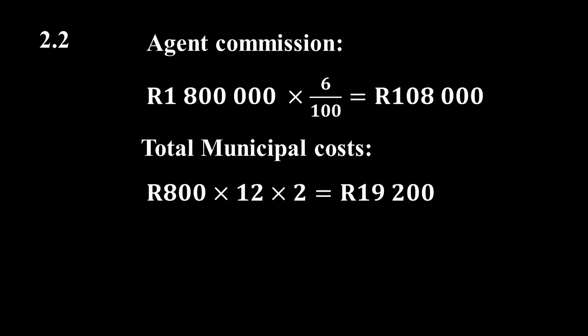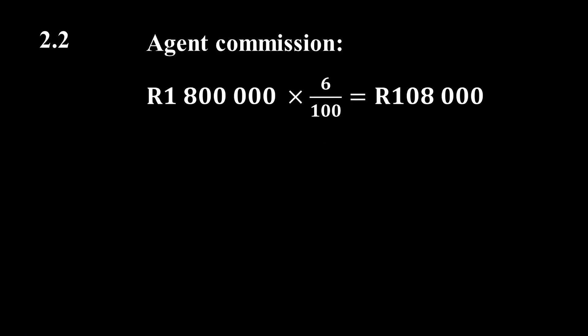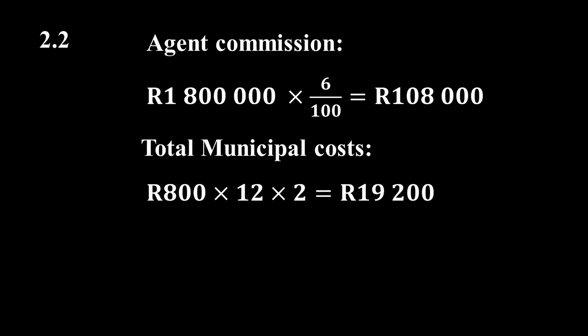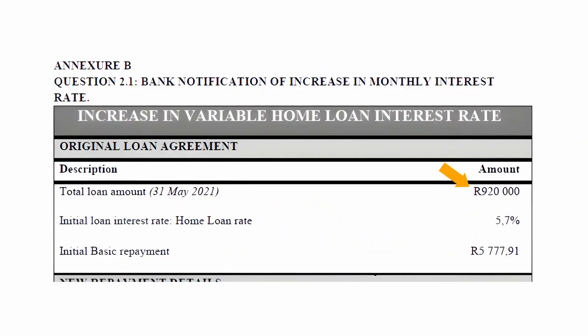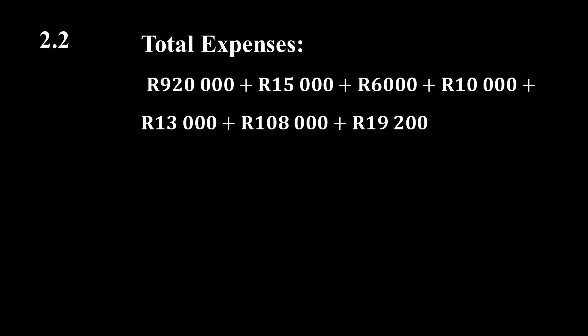Next, we find the total expense by calculating the sum of the total commission for selling the house, the total municipality rates and taxes over the two years, the improvements made to the house, and the initial loan amount. This gives us a total expense of 1,091,200 Rand.